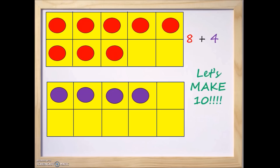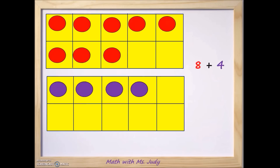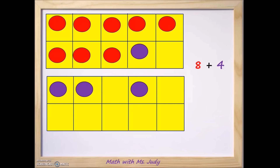Now what we're going to do is make 10 to make the addition problem a little bit easier. Let's look at the top — we have 8 counters. How many more do we need to make 10? Well, let's take a look. We have 1, 2 — we have 2 spaces open. So we can move some of the purple counters from the number 4 up here to the top to make the number 10.